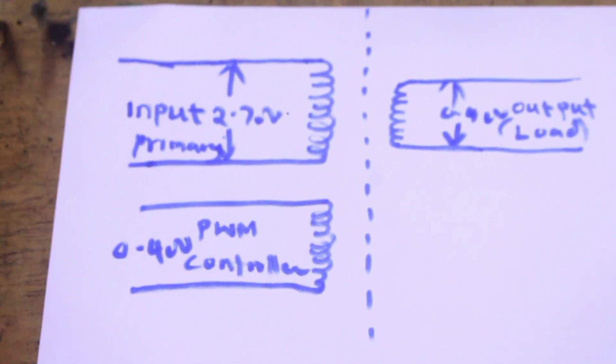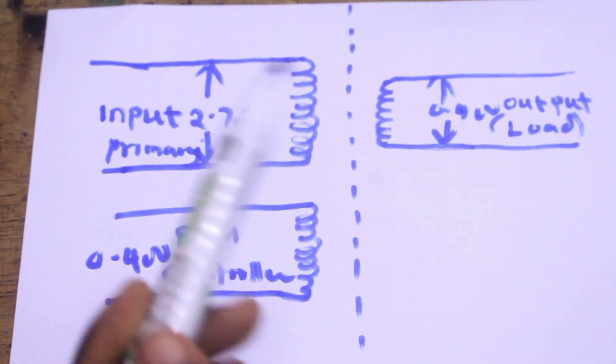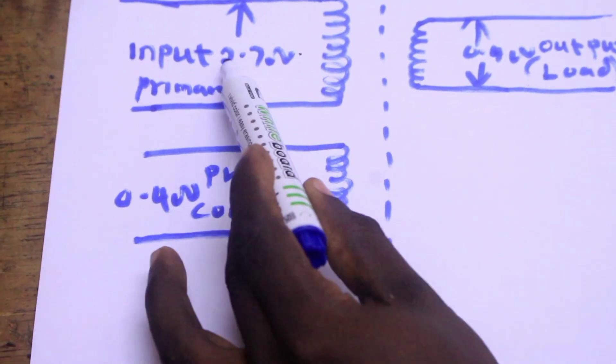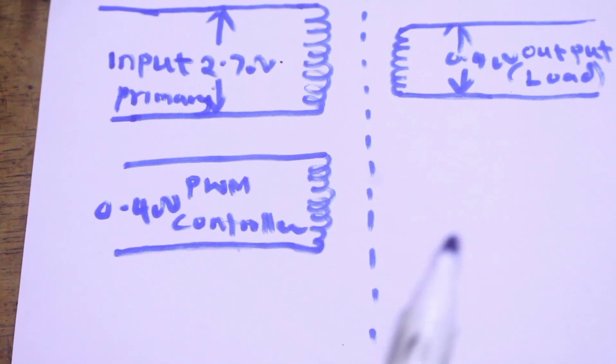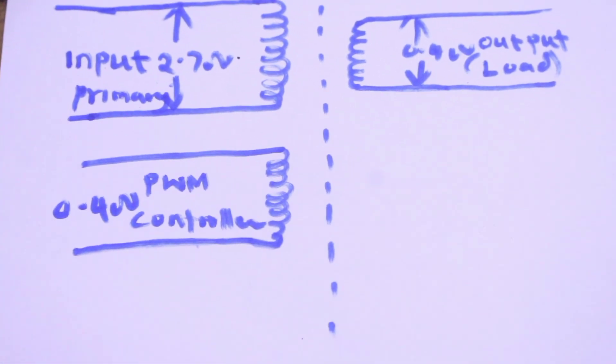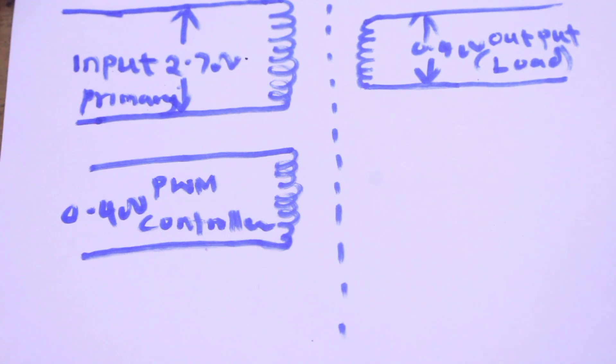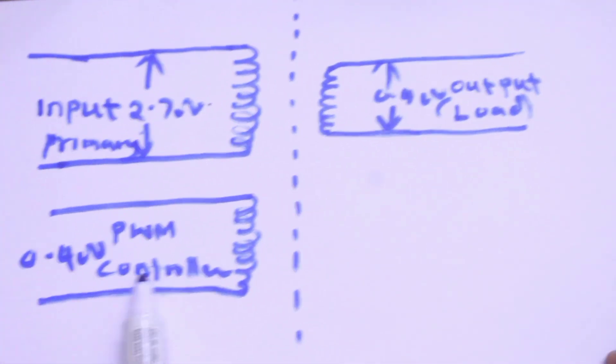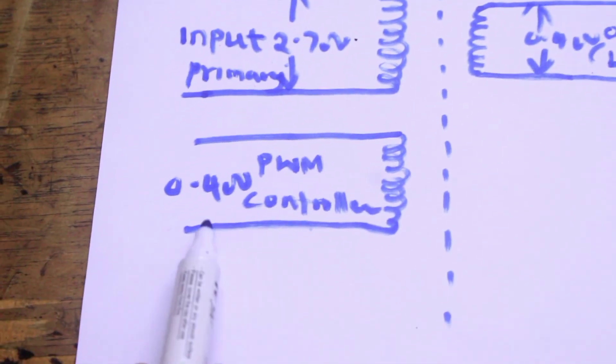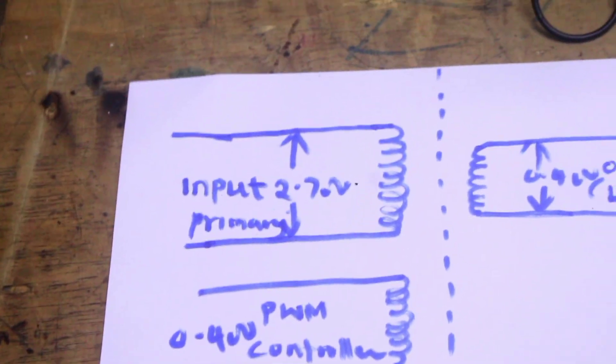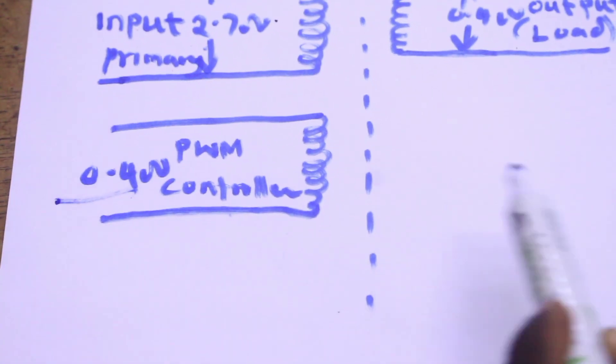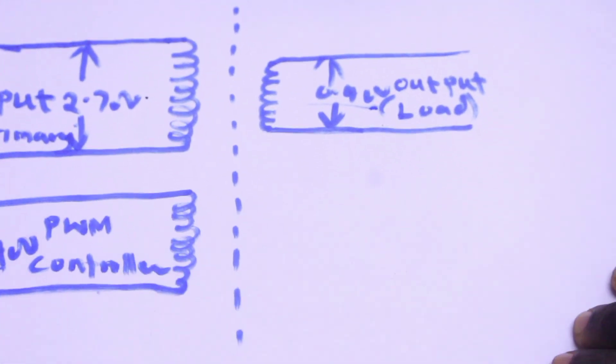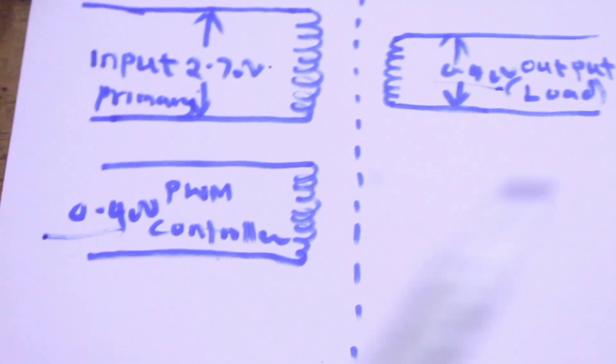The PWM controller is powered by either 5 volts, 12 volts or sometimes 25 volts depending with the controller. Our PWM controller here is powered by 5 volts. That is why you find that the auxiliary winding has the same winding resistance as the output winding because our SMPS power supply has an output of 5 volts.